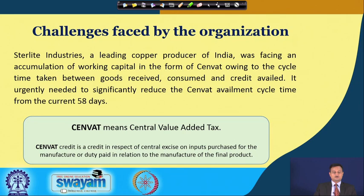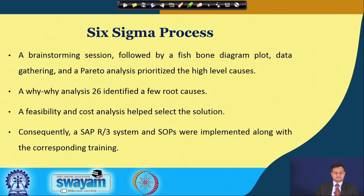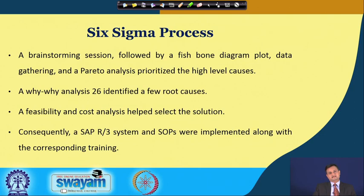Sterlite began with brainstorming sessions, fishbone diagrams for cause and effect, data gathering, Pareto charts, and a 5-Why (Why-Why) analysis that identified root causes. The Why-Why analysis is a very effective methodology to dig out root causes by repeatedly asking why something happened. A feasibility and cost analysis helped select solutions, and consequently SAP R3 system and SOPs were implemented along with corresponding training. They exactly figured out which areas needed to be addressed to reduce the cycle time.